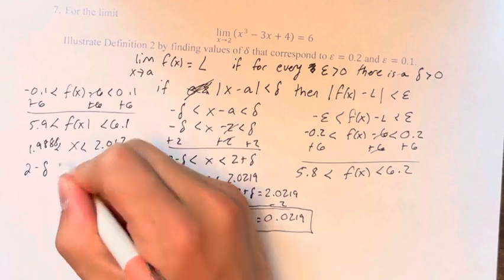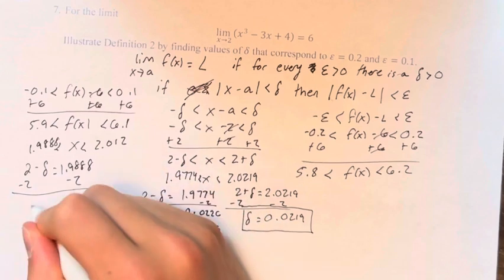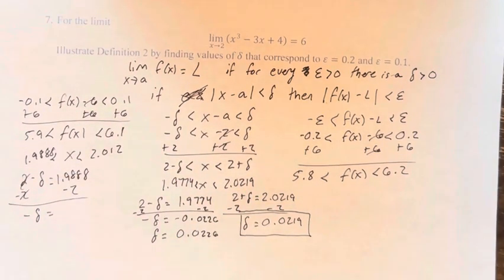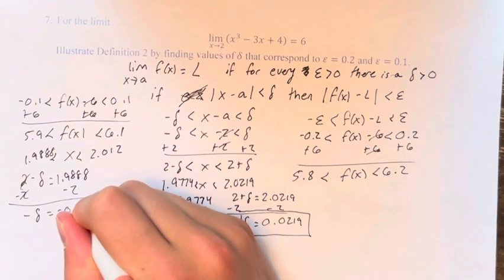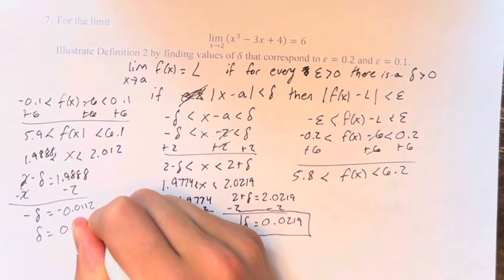And we're saying that these are dictated by the distance lambda away from 2 that they are. So 2 minus lambda is equal to 1.9888. Subtracting 2, therefore negative lambda is equal to 1.9888 minus 2, which is negative 0.0112. Therefore lambda is equal to 0.0112.